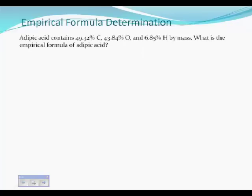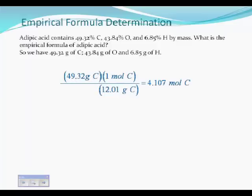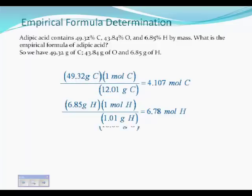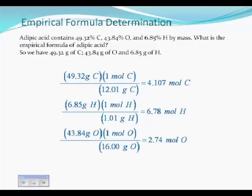Adipic acid contains the following percentages by mass. That would be an analysis we would get from a laboratory. What's its empirical formula? Well, we have 49.32 grams of carbon, 43.84 grams of oxygen, and 6.85 grams of hydrogen. And you go through and calculate the number of moles of carbon, the number of moles of hydrogen, and the number of moles of oxygen. And we get 4.107 moles of carbon, 6.78. This is what we've done before. There's nothing new here.